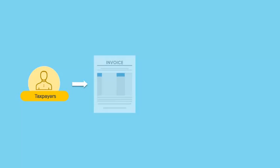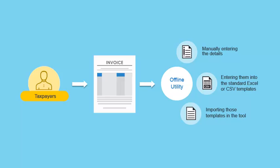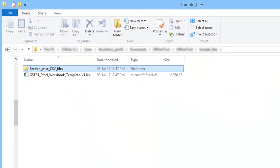Taxpayers can feed invoice and other returns-related data in the offline utility either by manually entering the details directly into the tool, or by entering them into the GSTN-provided standard Excel or CSV templates and then importing those templates in the tool. This video will walk you through the steps of populating invoice data in CSV templates, importing line items in the offline utility, and then uploading all of it to the GST portal.